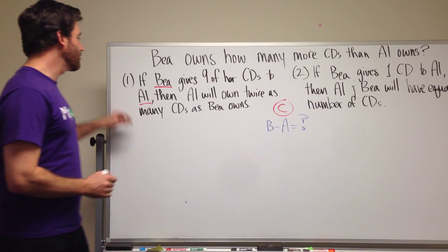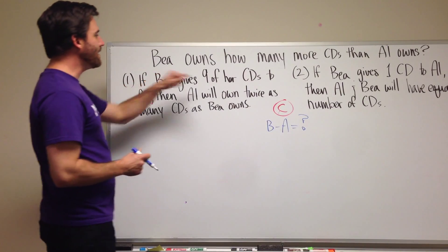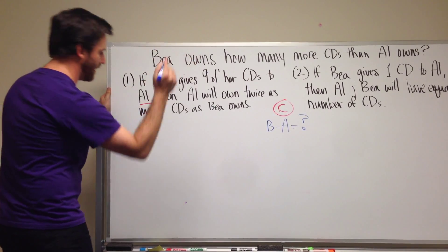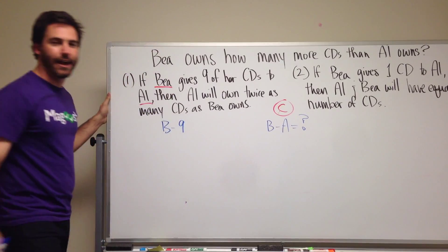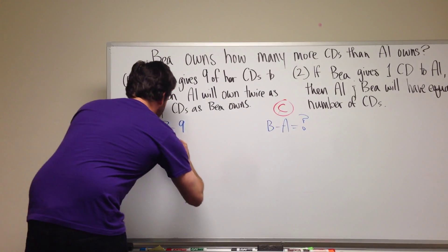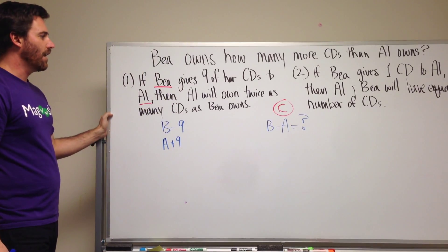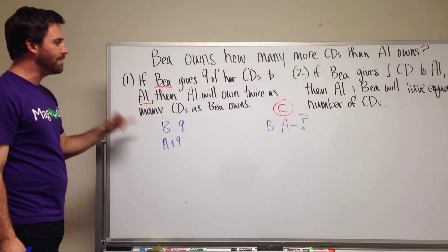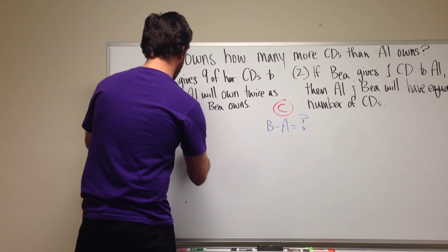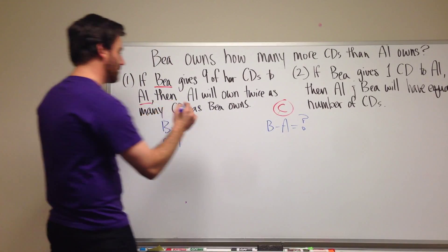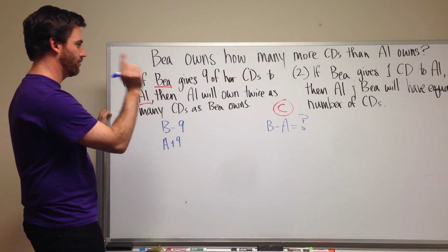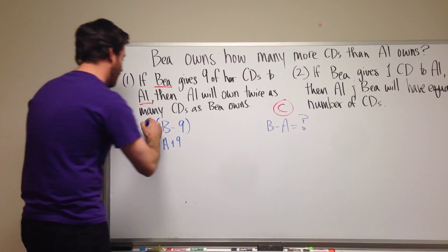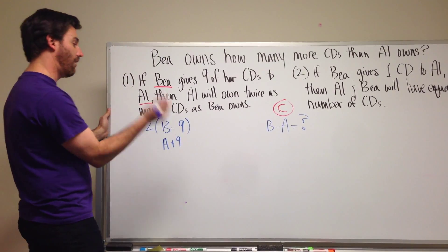That's our goal. So with the first statement we can see if B gives nine of her CDs to Al. Well, let's just do that first part. So B gives nine CDs. So that means B just lost nine of her CDs and Al gained nine CDs. That's excellent. And then Al will own twice as many CDs as B owns. So now we can form an equation.